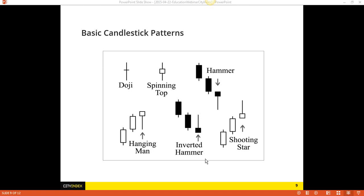The inverted hammer is very similar to a hammer — it's just that the actual candle is inverted. For me, the inverted hammer is much less strong than the hammer candle because the inverted hammer doesn't tell me nearly as strong a story. But it is a possible reversal pattern to the upside. And if this happens near support, then much better than if it doesn't. The hanging man, if it happens near resistance, is much better as a reversal pattern than if it doesn't.